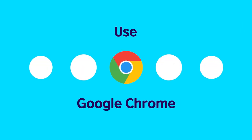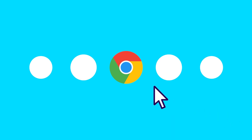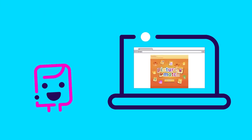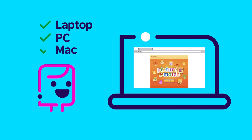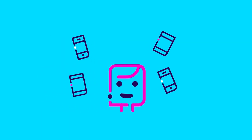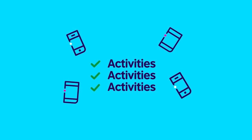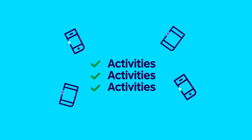Step 1. The Learning Hub works best with the most recent version of Google Chrome. Activities work best on a laptop, PC or Mac. But don't worry if your child uses a tablet or a phone — they'll still be able to complete the activities. It's just that the experience is better on a larger screen.